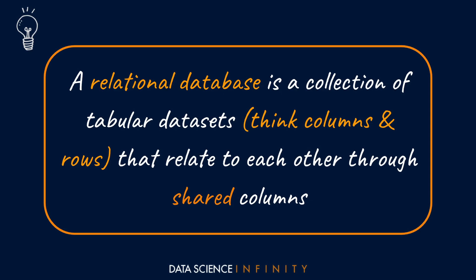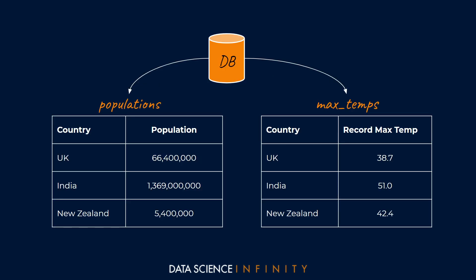Here's a simple example where we have a database containing two small tables. The one on the left is called 'populations' and contains a country name column and a population column. On the right is a table called 'max temps,' which also has a country column and a column for the record maximum temperature per country. We could manipulate data within each table in isolation, or join them via the shared country column for more interesting analysis.